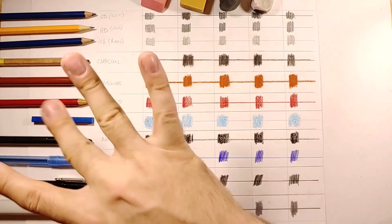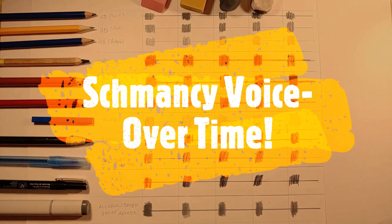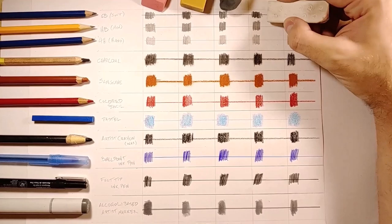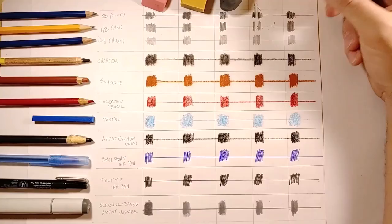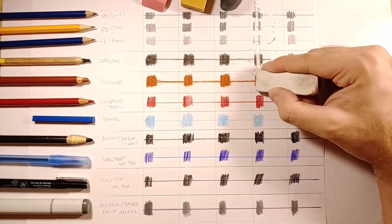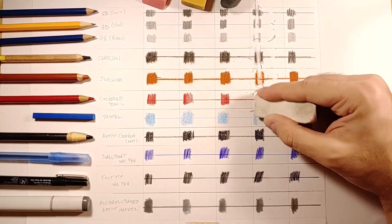Okey dokie, so I started with the plastic eraser, vinyl eraser excuse me, and this one took care of the graphite really well. I mean a little bit of smudging on the softer graphites and charcoals, but overall it still took out a good chunk of it and I'm barely pressing at all. Even with the colored pencil which is always hard to erase, same with the pastel, the wax crayon a little bit of smudging there, a lot of smudging, but let's be realistic how often do we use wax crayons. A little bit with the ink and marker, not a ton there though.